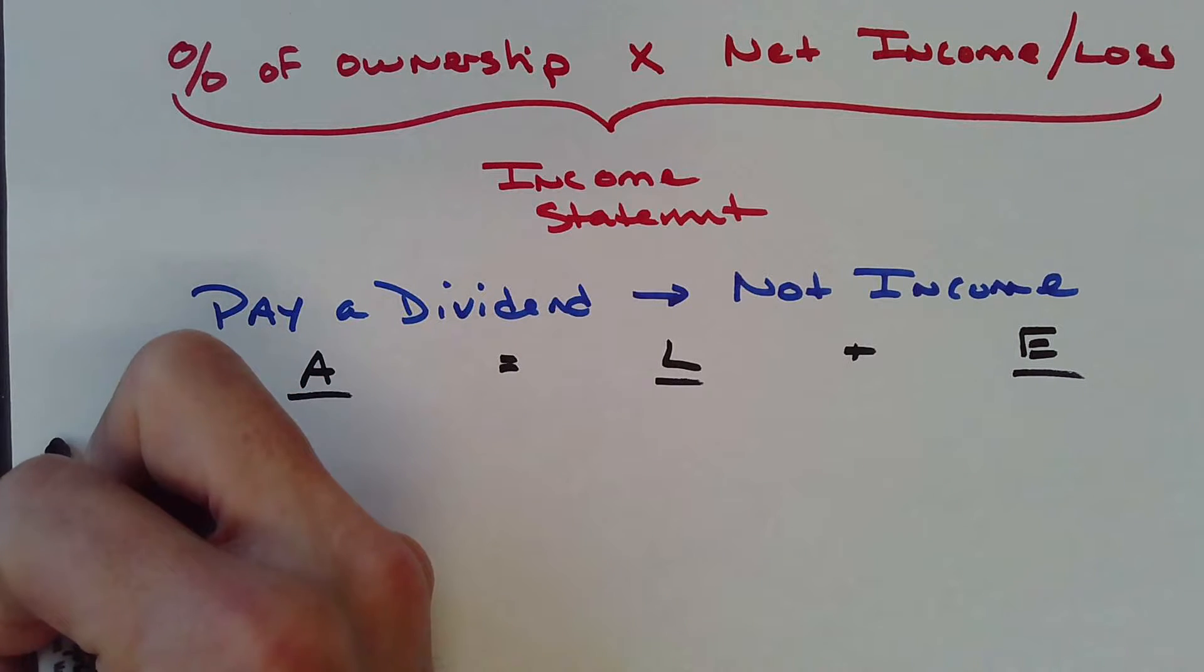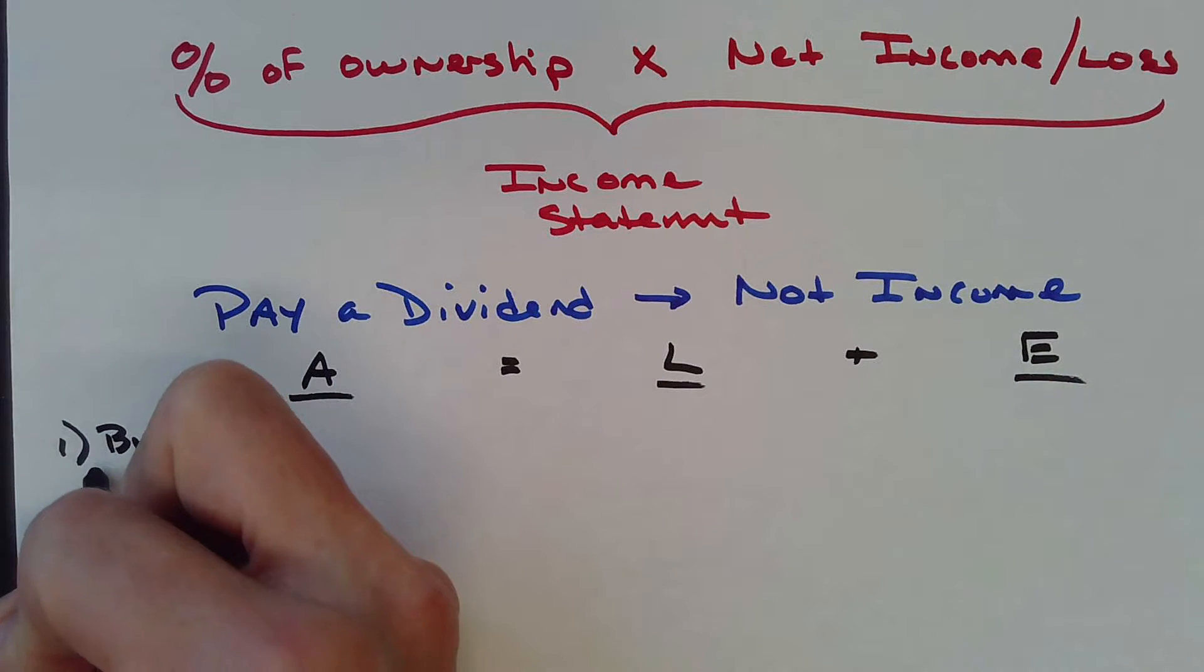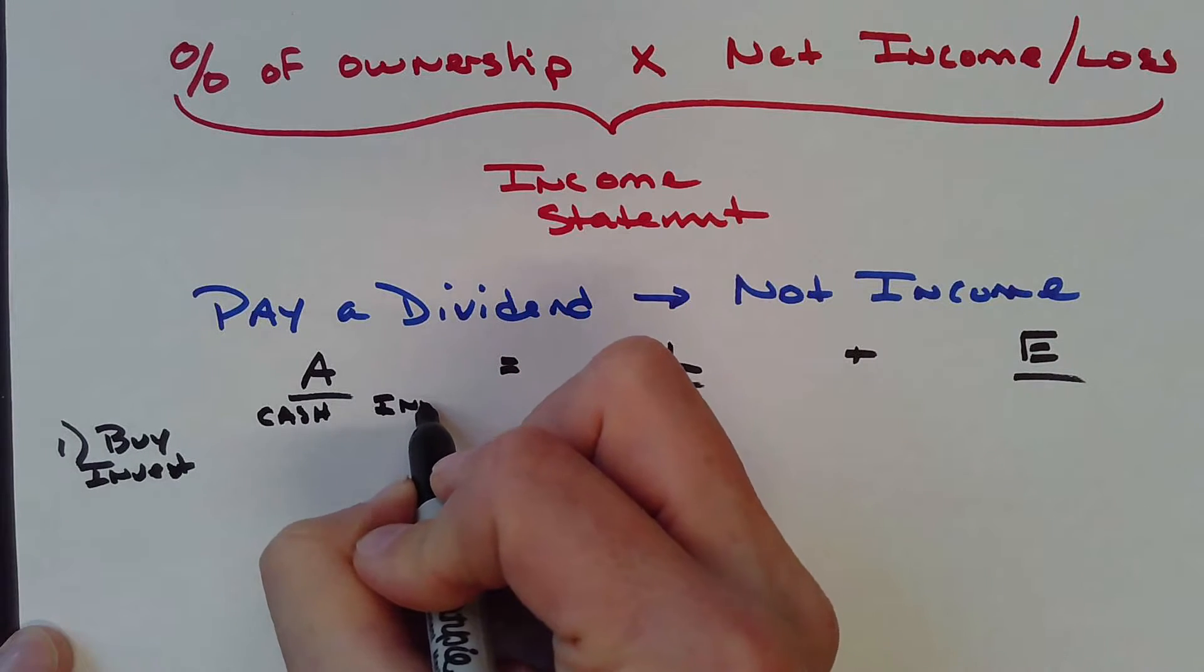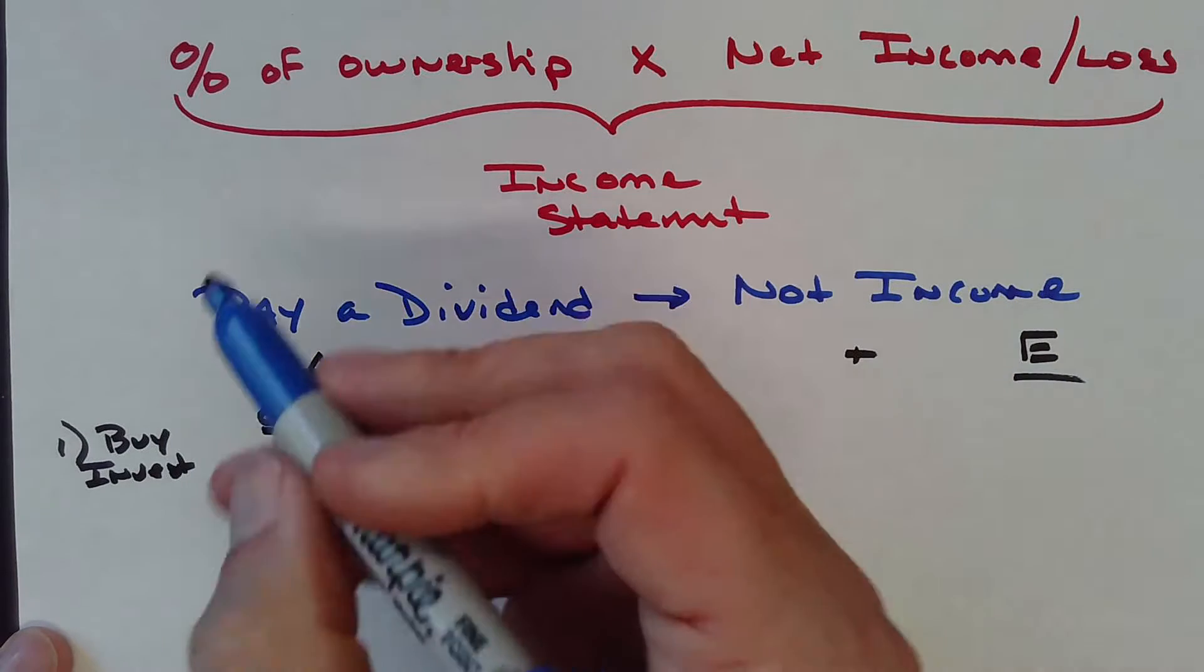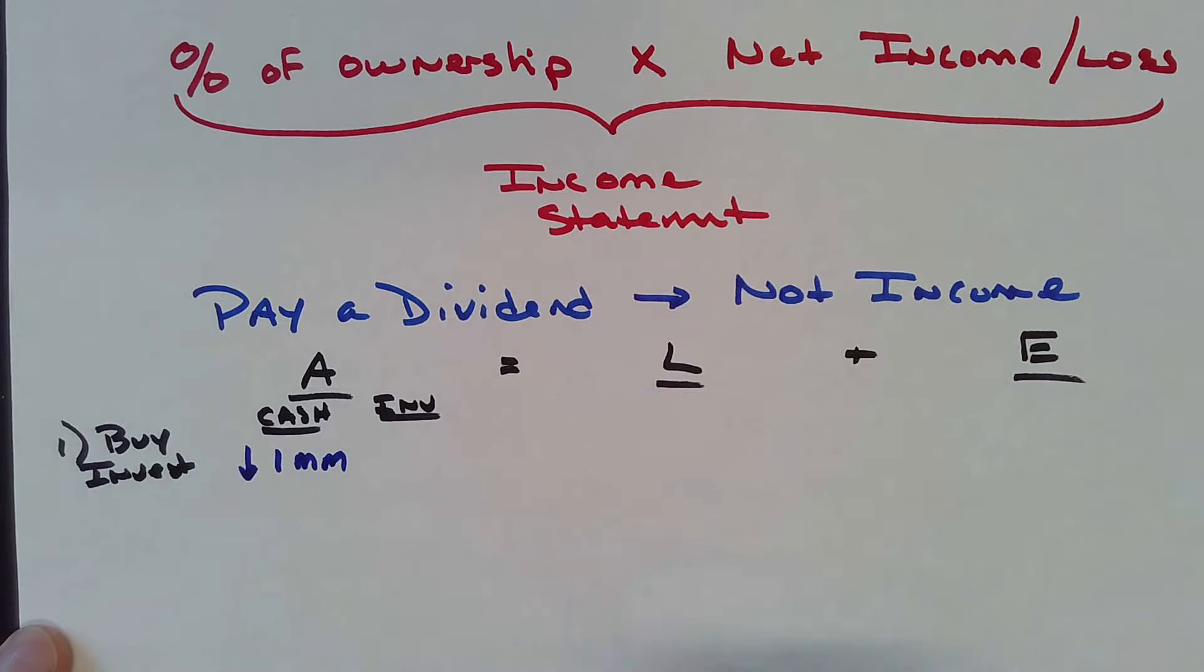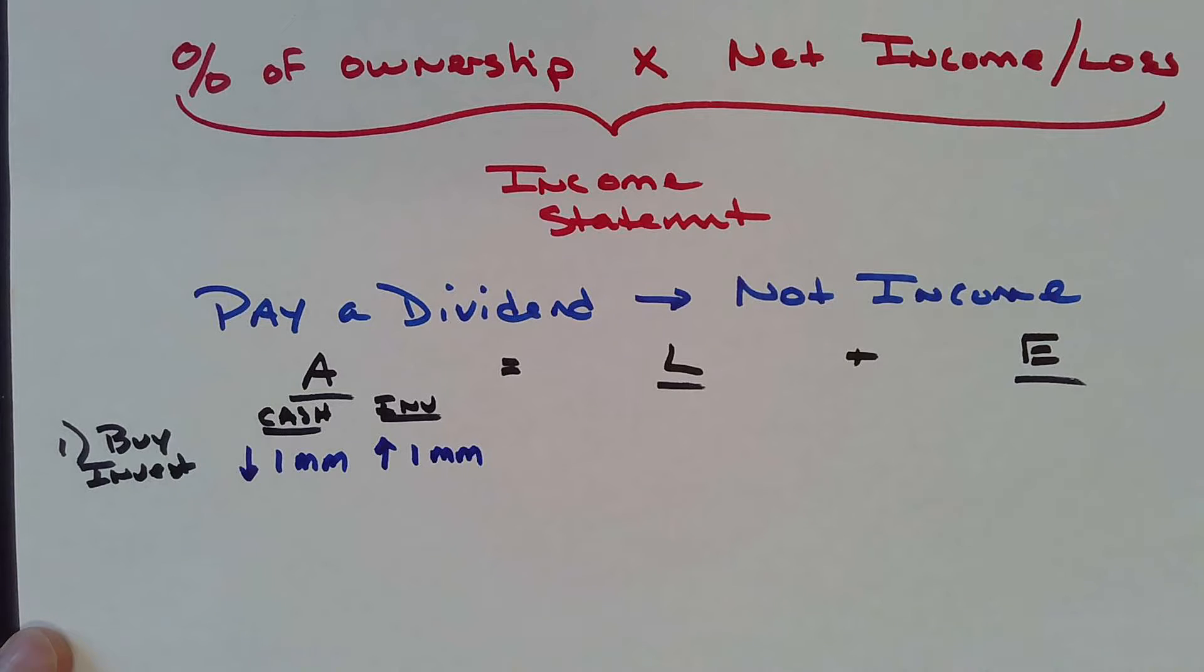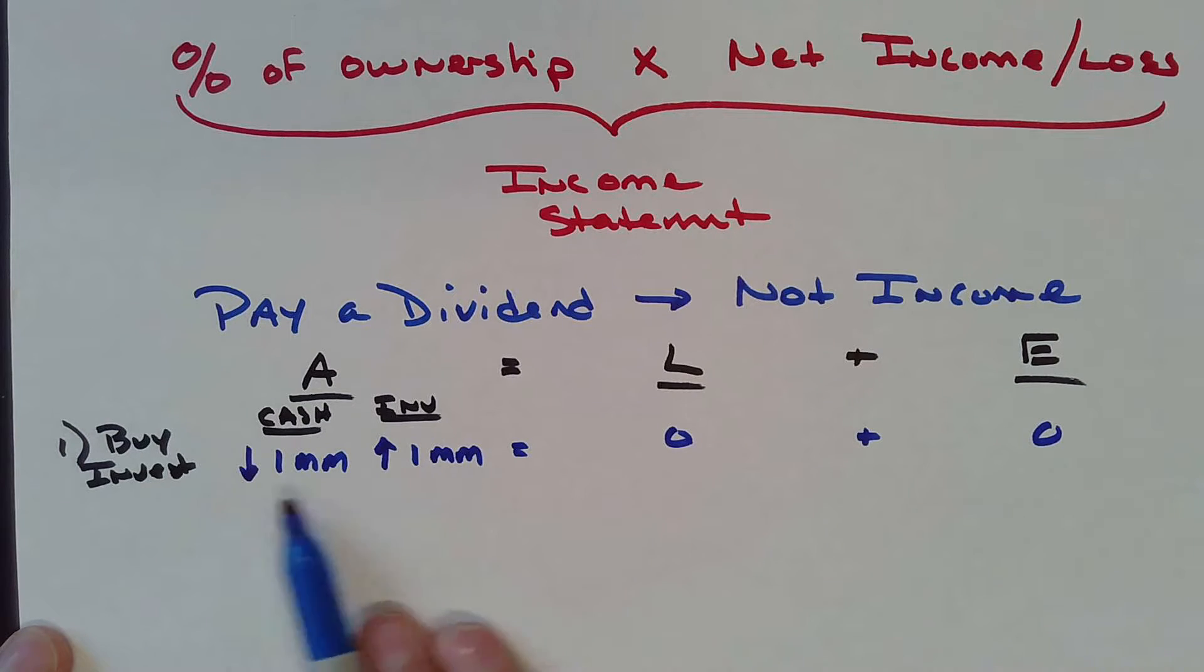The first transaction is buying the investment. I've got cash and the investment account. When I buy the investment, cash goes down one million dollars and investment goes up one million dollars. This balances: zero plus zero.